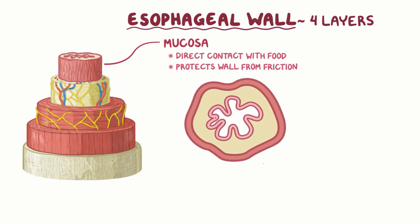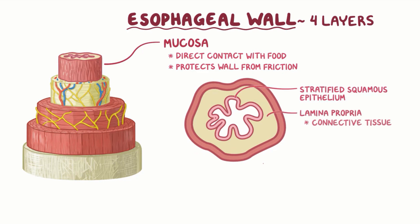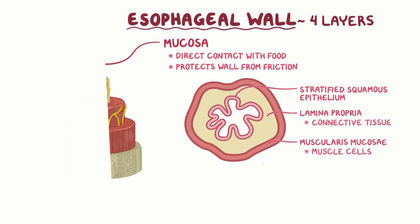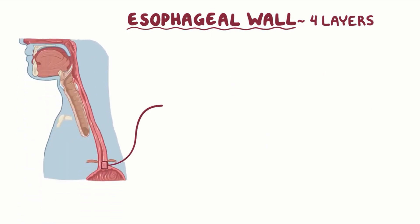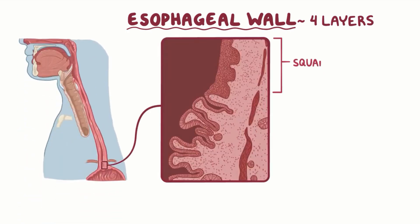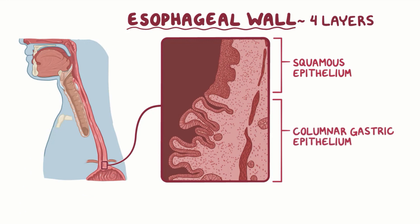The mucosa also has three layers of its own: a layer made of stratified squamous epithelium, a layer of connective tissue called the lamina propria, and a layer of muscle cells called the muscularis mucosae. Finally, at the lower esophageal sphincter, the squamous epithelium joins the columnar gastric epithelium to form the gastroesophageal junction.